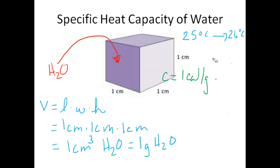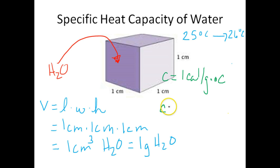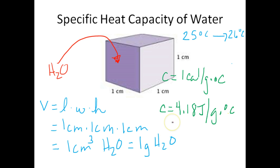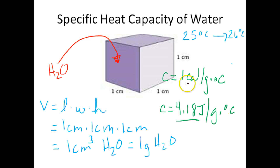Another way we can express this is in joules. The specific heat capacity of water is 4.18 joules per gram degree Celsius. Depending on what your teacher is asking for will determine what unit you need to use. But basically, the specific heat capacity of water is 4.18 joules per gram degree Celsius or one calorie per gram degree Celsius. So if you want to heat this water up one degree Celsius, it will take 4.18 joules or one calorie.